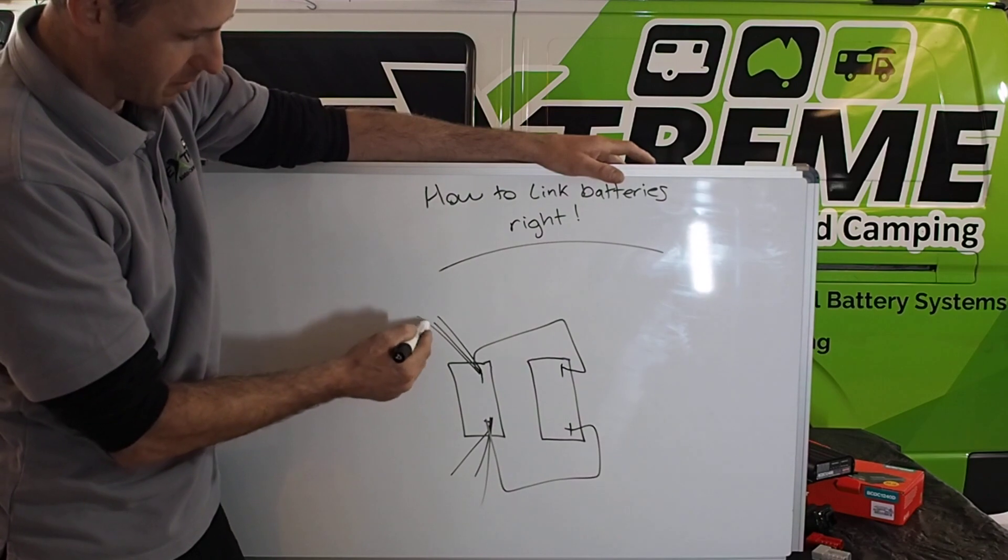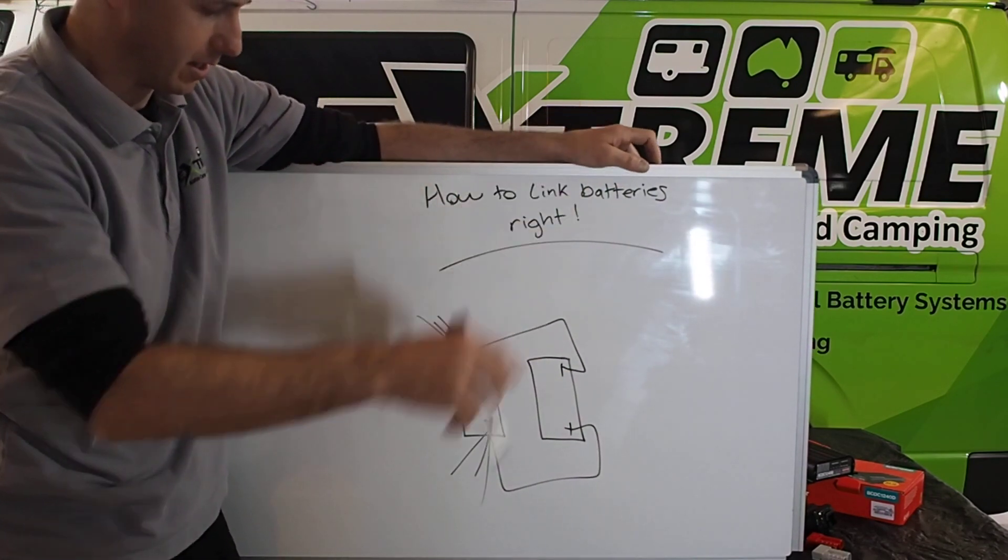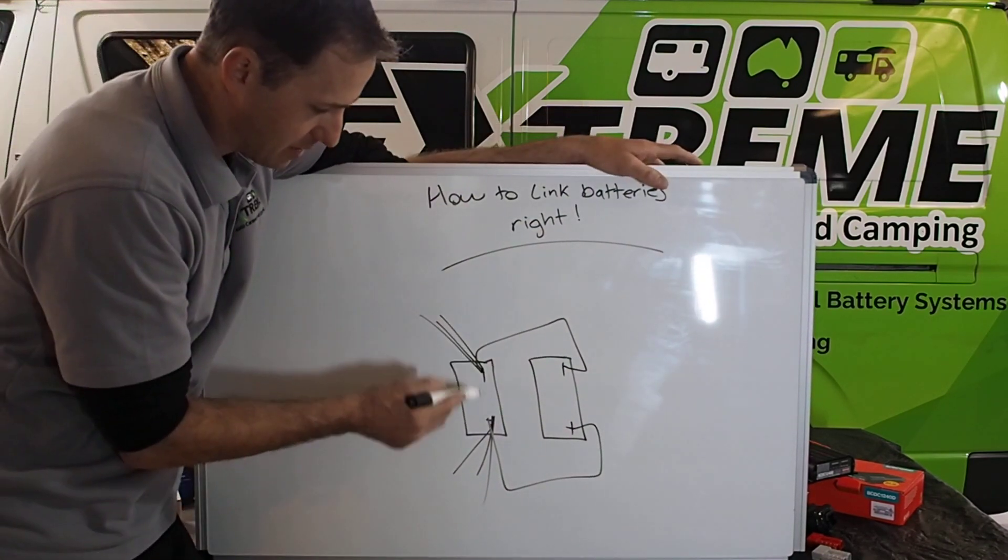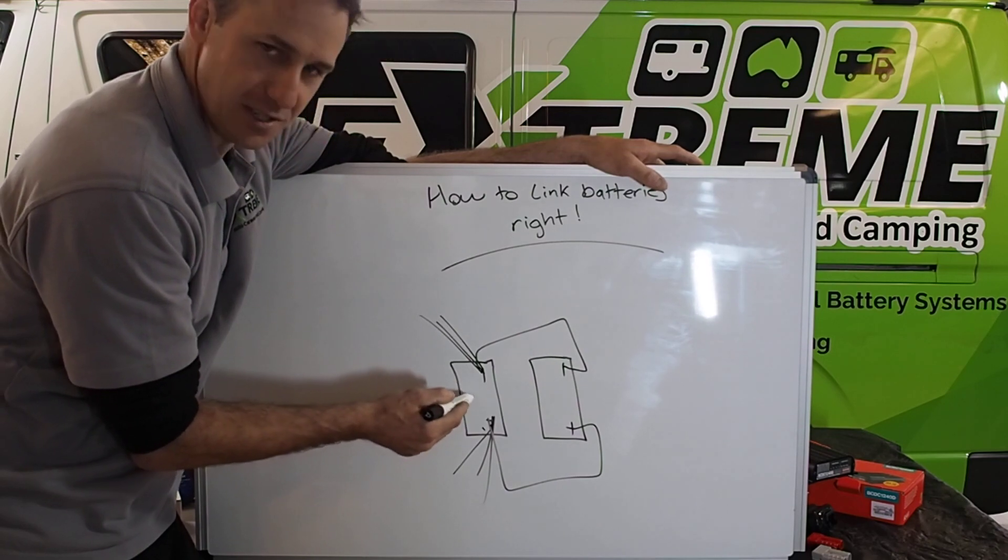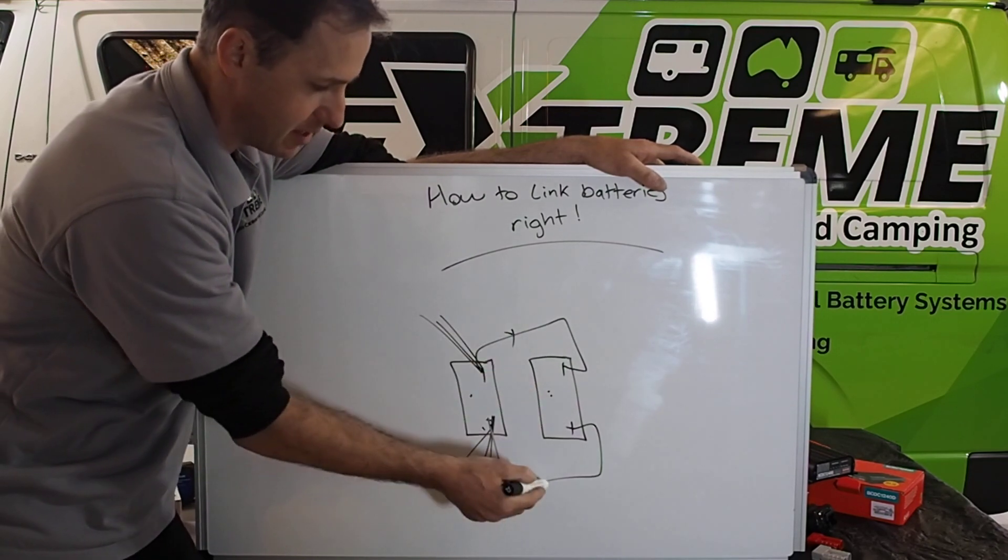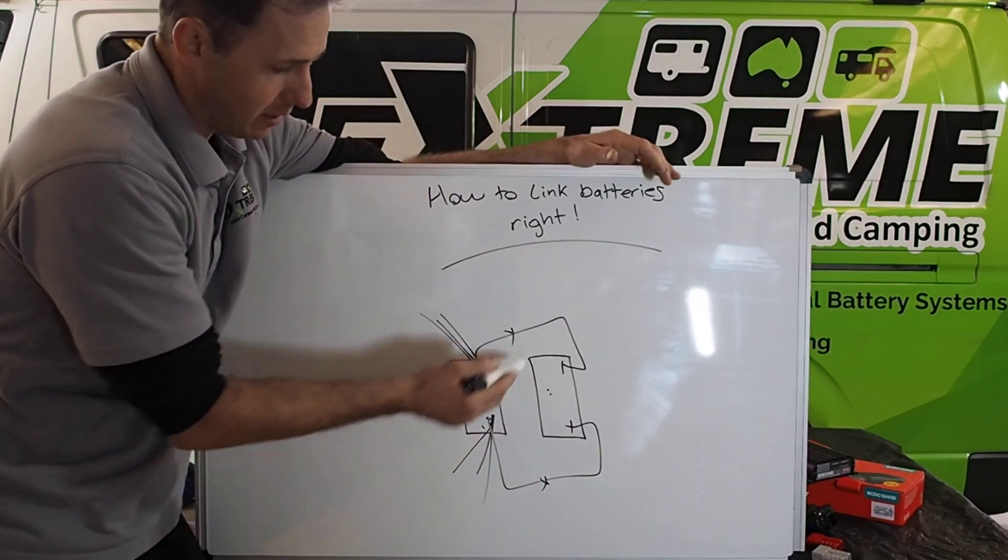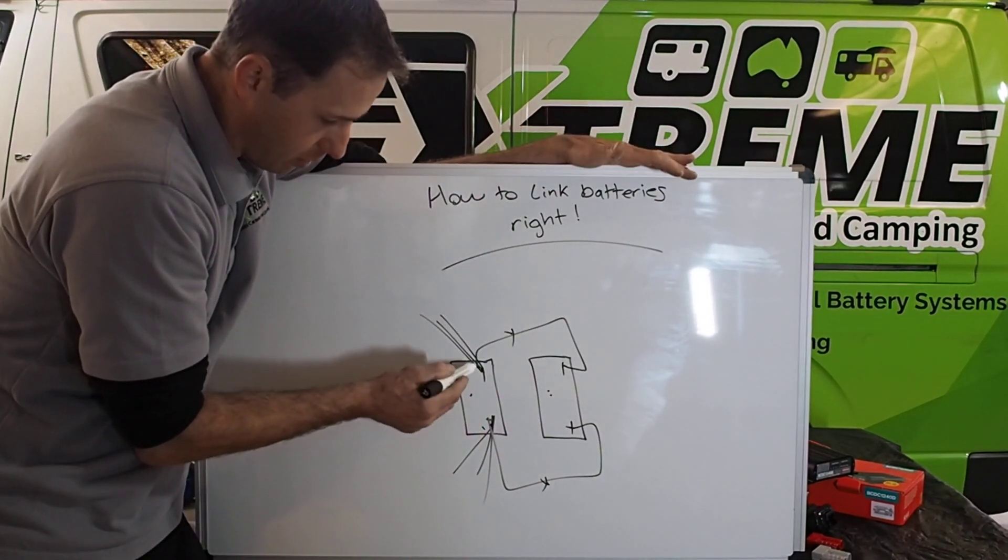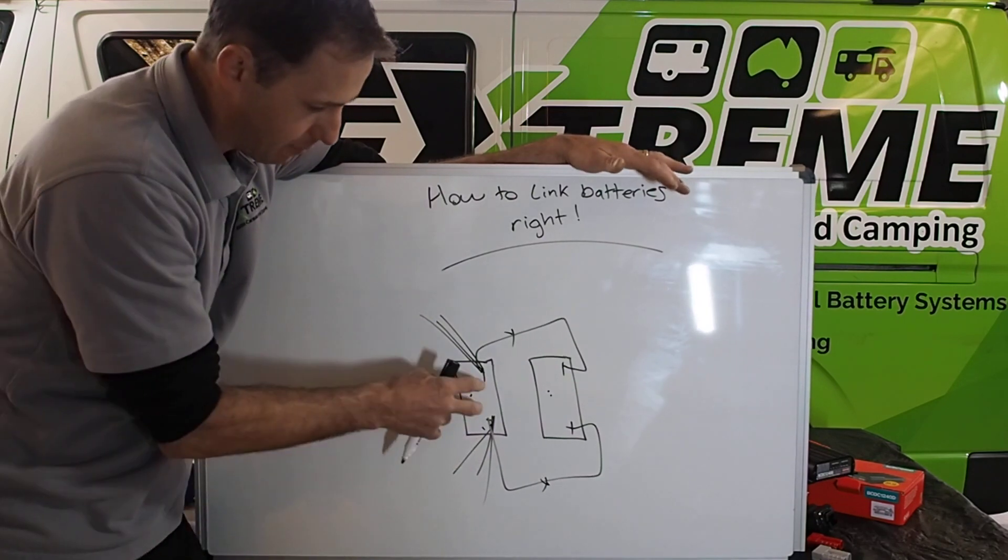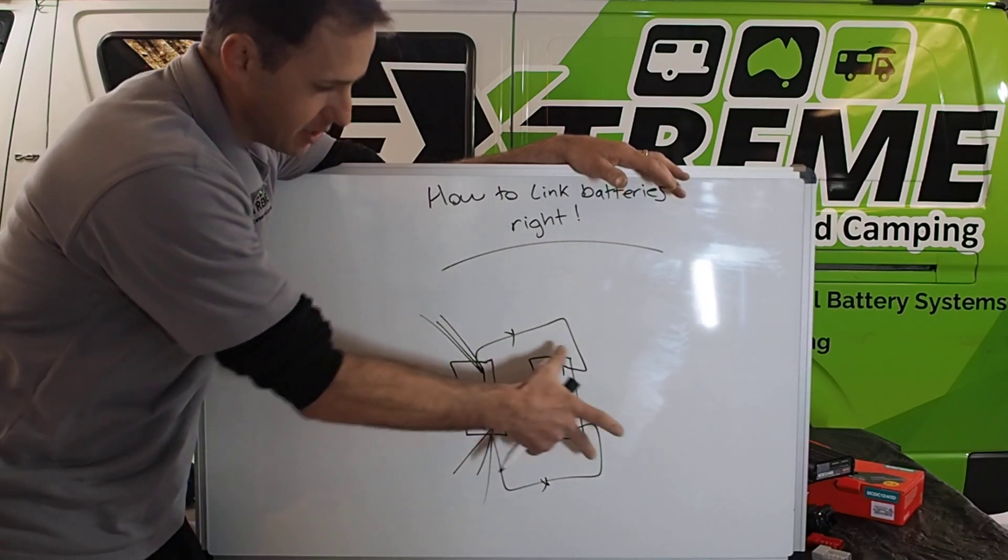Now what happens is, if there's a monster inverter on the system that our mate didn't tell our mate about, you put a big demand on these two, well, this is going to be lower than this. Yes, they're nice and thick if they are thick, depending on who's selling the cables or whatever. The point is, you've got negatives and positives coming out of the one battery, and then these are just linked in.